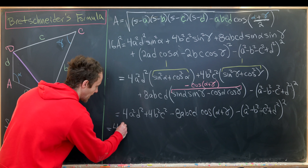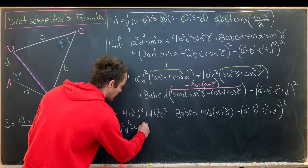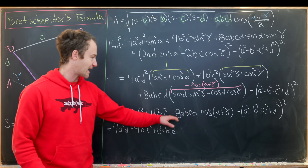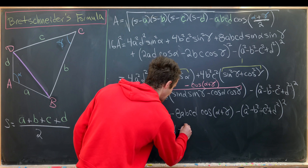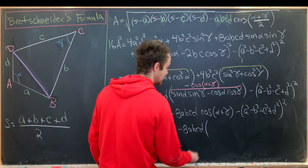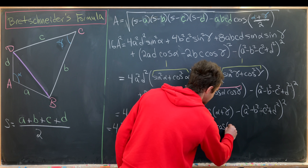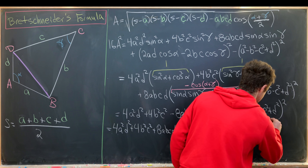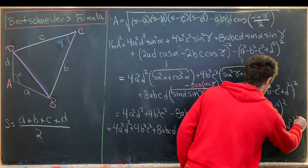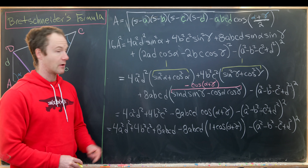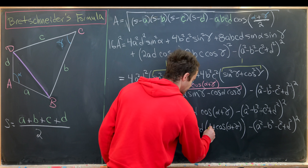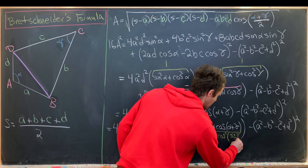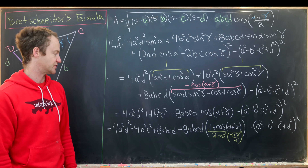Rewriting, we get 4a²d² + 4b²c² + 8abcd minus 8abcd·(1 + cos(alpha+gamma)) minus (a²−b²−c²+d²)². Using the power-reducing identity, 1 + cos(alpha+gamma) = 2cos²((alpha+gamma)/2). Also, 4a²d² + 4b²c² + 8abcd factors nicely as (ad + bc)².